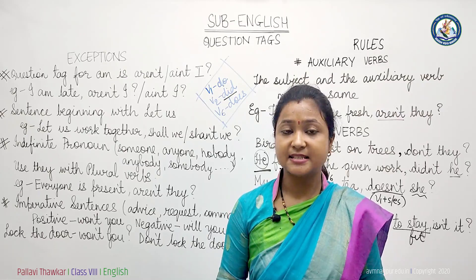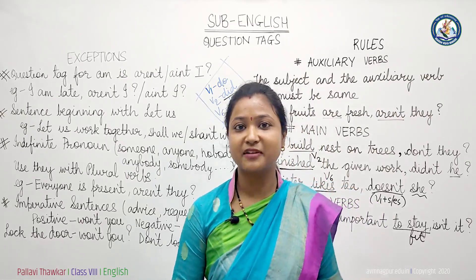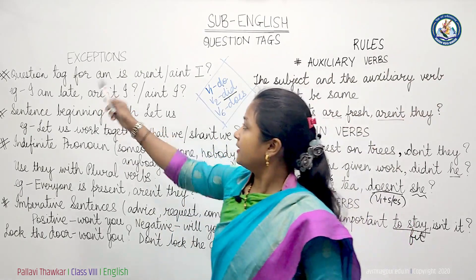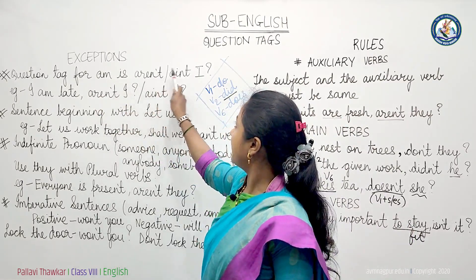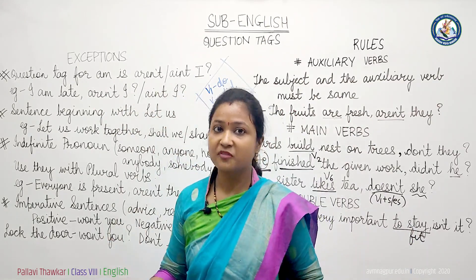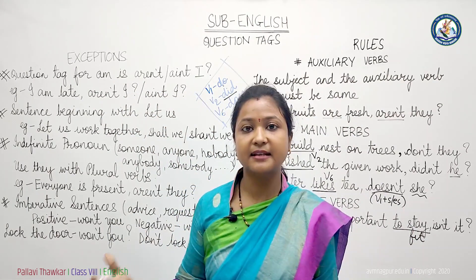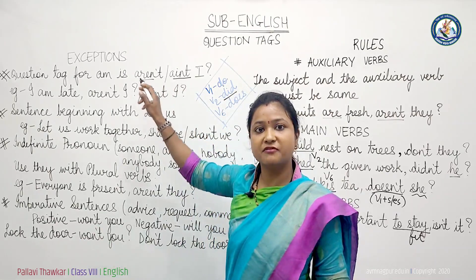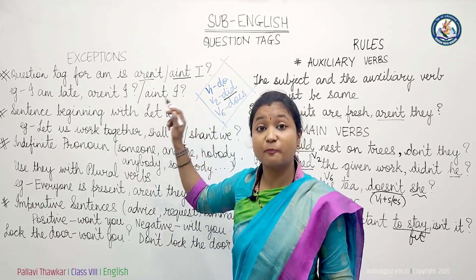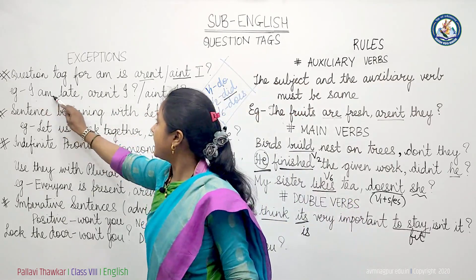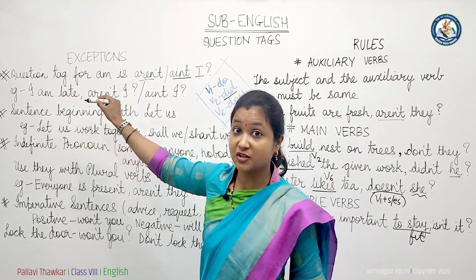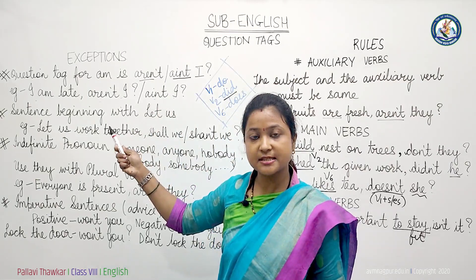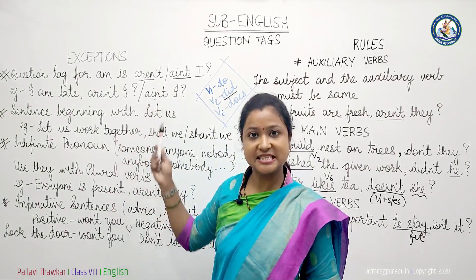Now let's understand some exceptions. English has lots of exceptions in grammar. The first exception: the question tag for 'am' is 'aren't I' — we can't say 'amn't I', as that doesn't exist. For example, 'I am late, aren't I?' — since the statement is positive, we use the negative form. Both spellings 'aren't I' and 'ain't I' have the same pronunciation and meaning, just a spelling difference.